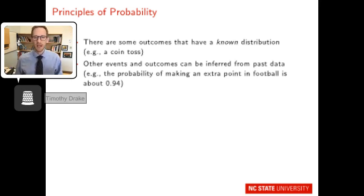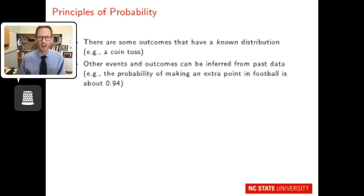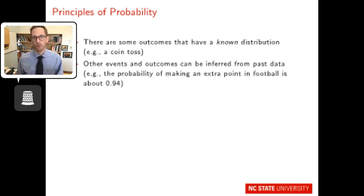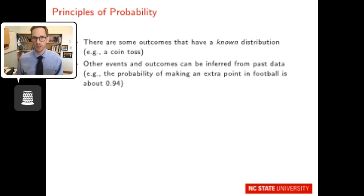The coin toss is useful because we know its distribution — heads or tails, with a long-run average of 50%. Other events, while uncertain, can be inferred from past data. In the NFL, making an extra point had about a 94% success rate. Similarly, weather patterns use predictive models drawing on past data and current conditions to give probability forecasts. We gather lots of data over time to know what the long-run distribution is likely to be.